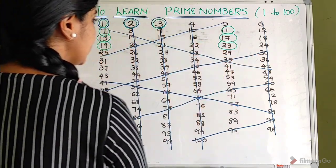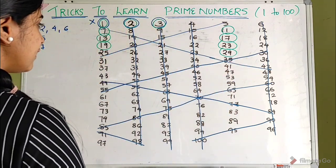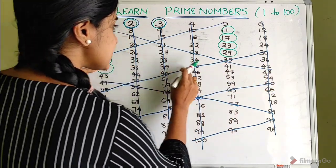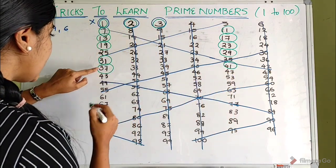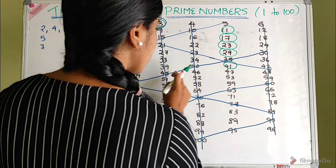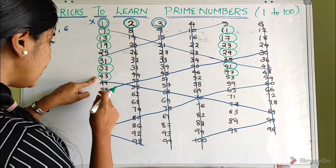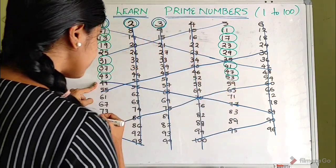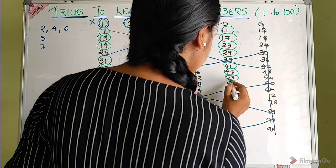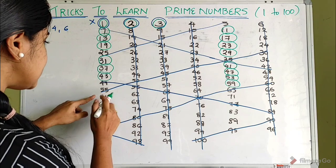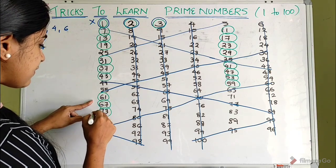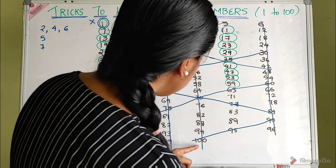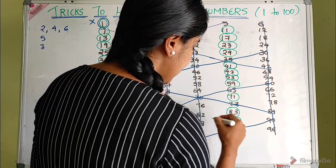The remaining prime numbers are: 23, 29, 31, 37, 41, 43, 47, 53, 59, 61, 67, 73, 79, 97, 71, 83, and 89.